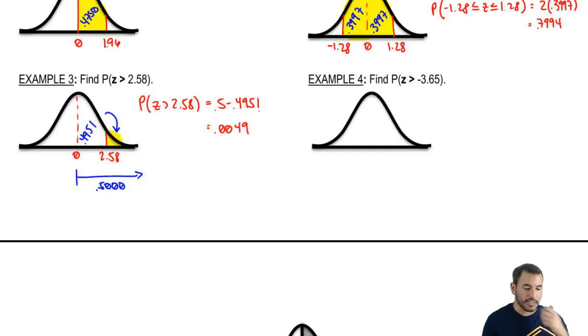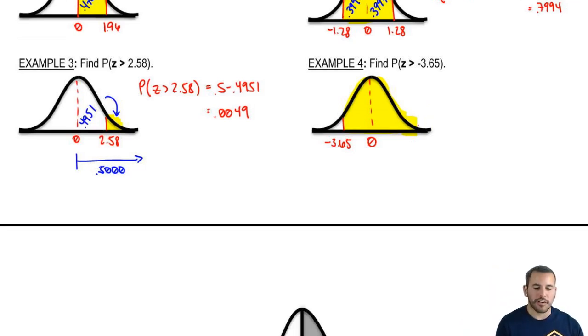Let's do example 4. Probability that z is greater than negative 3.65. Here's 0. Here's negative 3.65. I'm doing it on the left because negative means that it's below the mean, or below the 0 point. We're looking for everything greater than that. The probability that z is greater than negative 3.65. Let's look up 3.65 and see where we go from there.